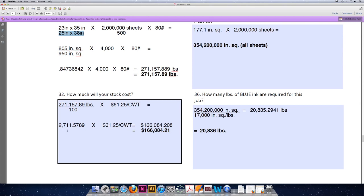271,157.89 divided by 100 moves the decimal place over two places to the left, so you should have come up with 2,711.5789 pounds. Multiplied by 61.25, this comes out to a total of $166,084.201.